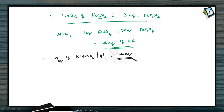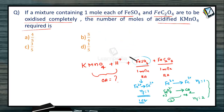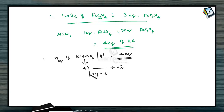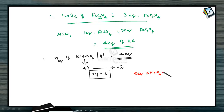We need 4 equivalents of acidified KMnO₄, but the question asks for moles, not equivalents. So we need to convert equivalents of KMnO₄ into moles. The manganese in KMnO₄ is in +7 state and during the reaction in acidic medium it changes to +2. So the N-factor of KMnO₄ in acidic medium is 5. This means every 5 equivalents of KMnO₄ in acidic medium corresponds to 1 mole.